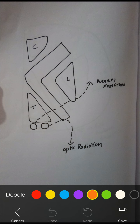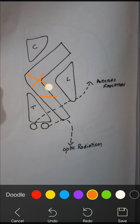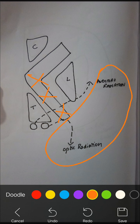For clinical significance: if a stroke affects the genu, the motor and sensory tracts of the head and neck are affected. If a stroke affects the posterior limb, the motor and sensory tracts of the body are affected. And if a stroke affects the sublentiform or retrolentiform parts, the patient will have auditory and visual symptoms.